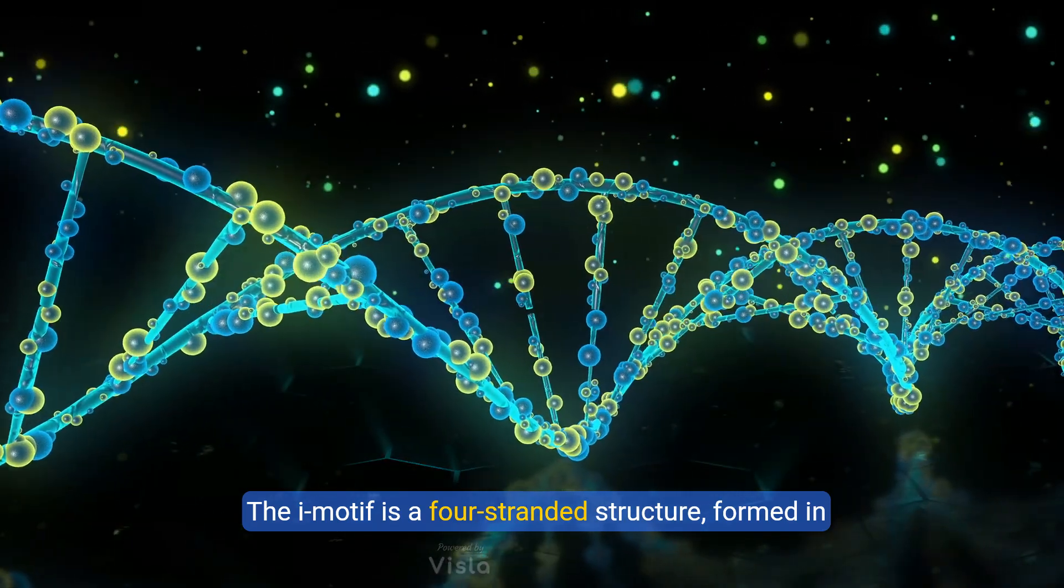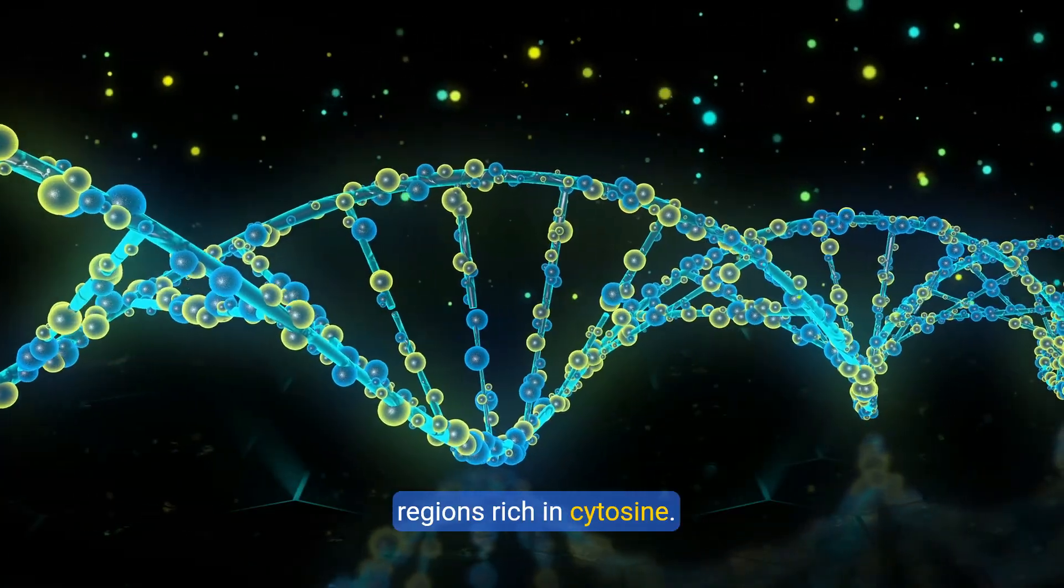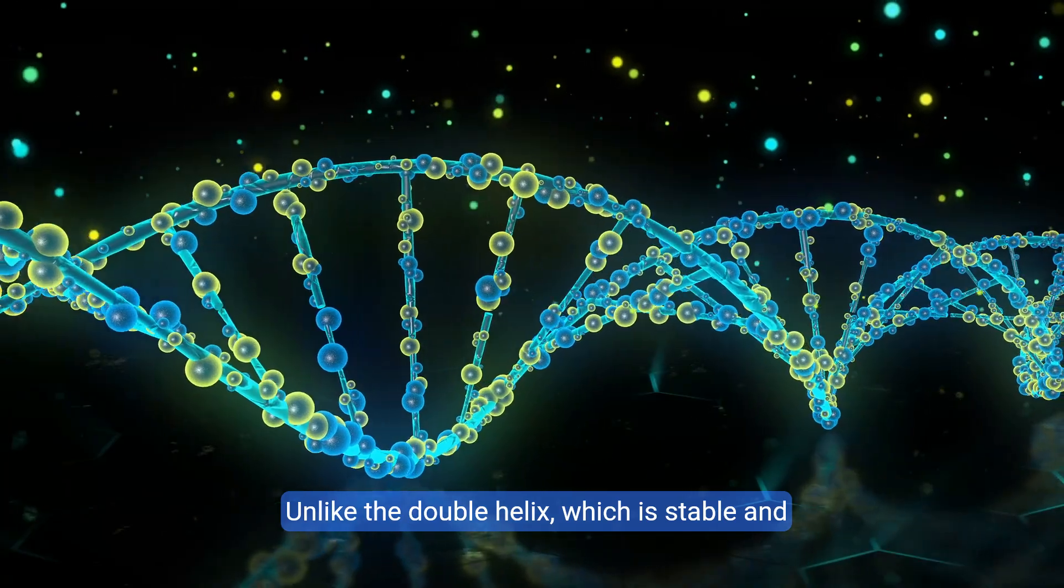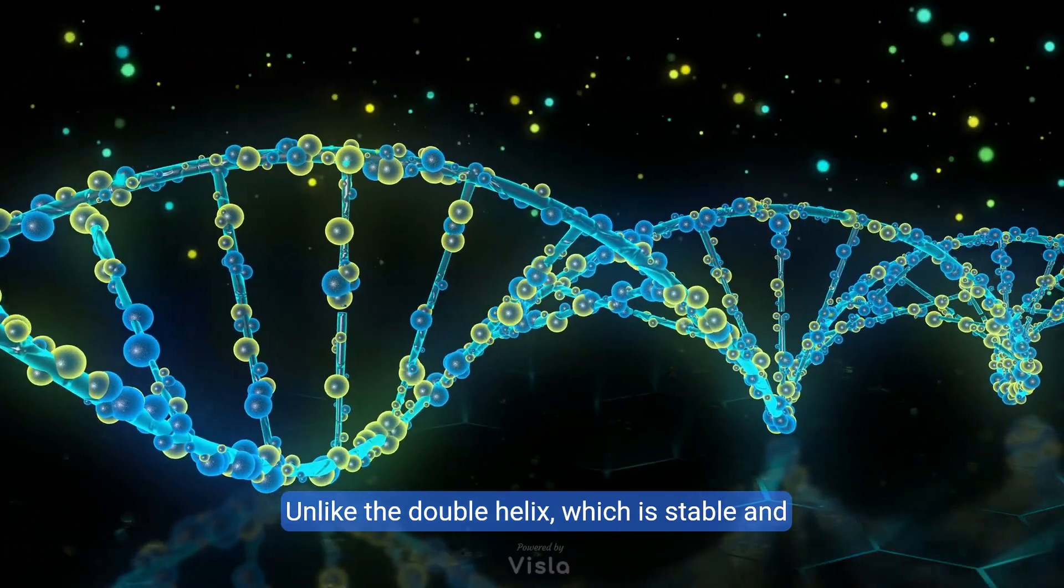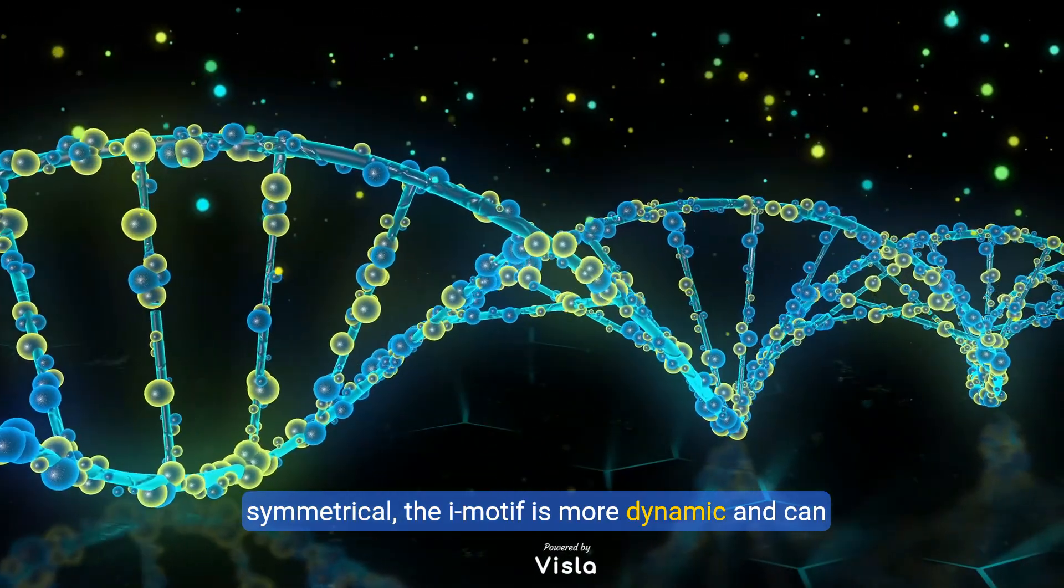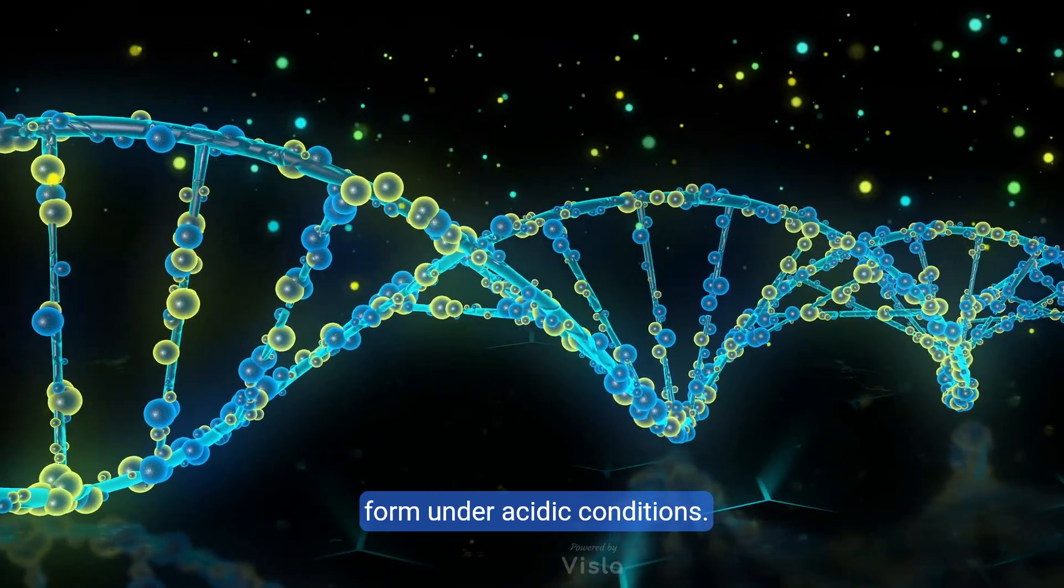The eye motif is a four-stranded structure formed in regions rich in cytosine. Unlike the double helix, which is stable and symmetrical, the eye motif is more dynamic and can form under acidic conditions.